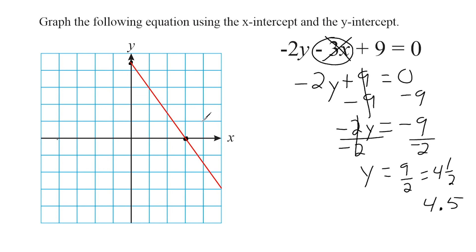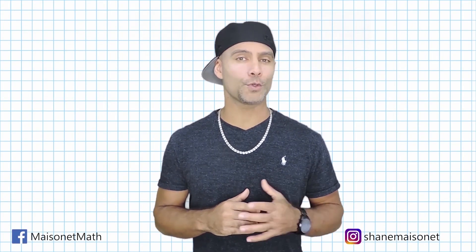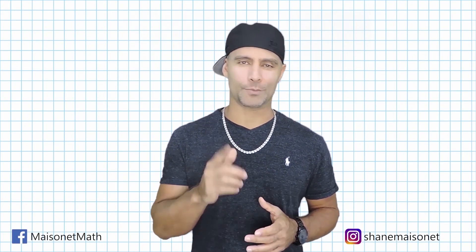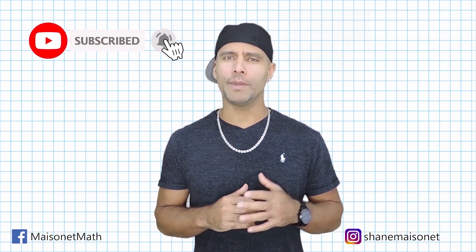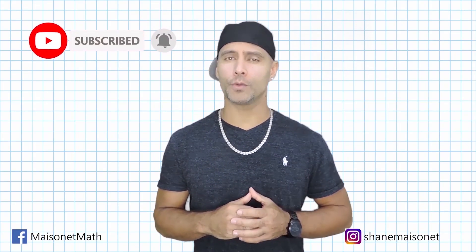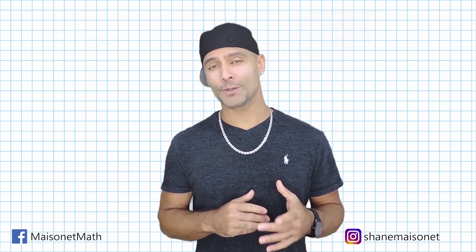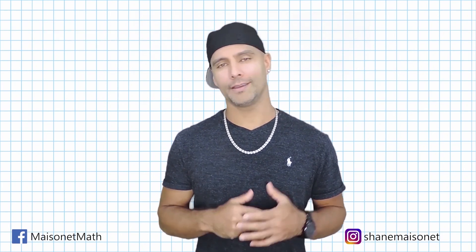So remember: when figuring out your x-intercept, the y value will be equal to 0, so you plug 0 in for y and solve. To figure out your y-intercept, your x value will be equal to 0, so you plug 0 in for x to solve for y. Once you have those two points, you can form a line that represents the equation on your graph. Thanks for checking out this math tutorial — please hit that subscription button and activate notifications so you can be informed as new tutorials are uploaded. Until next time, this is Shane Masonette with Masonette Math.